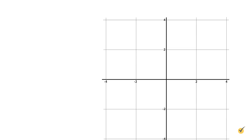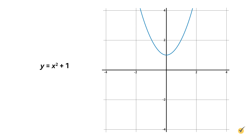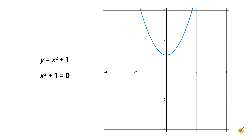Let's try one more. Consider the graph for y equals x squared plus one. We can use this graph to identify possible solutions to the equation x squared plus one equals zero. Looking at this graph, we see that it doesn't pass through the x-axis at all, which means there are no x-intercepts. In other words, there are no real solutions to this equation.